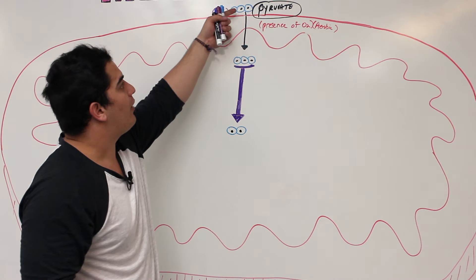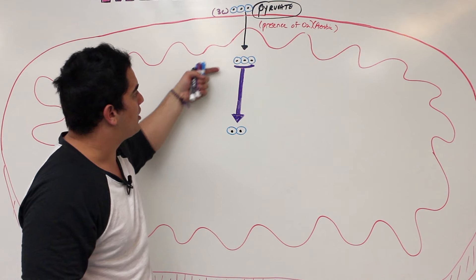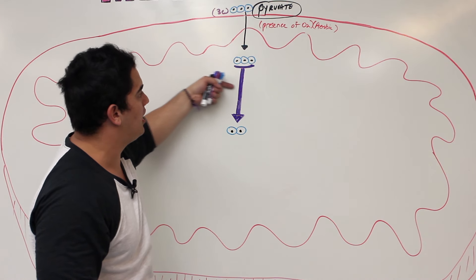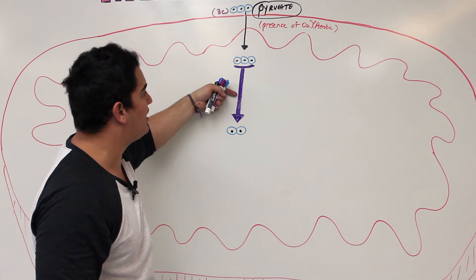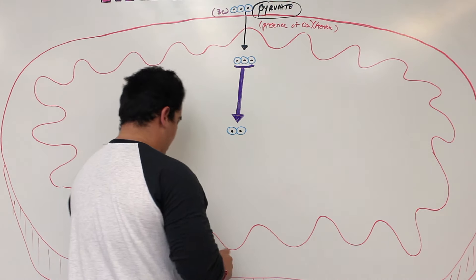So the only way the pyruvate can get taken into the mitochondria and start getting converted into this next molecule is if there is oxygen present. Now when pyruvate is transported from the cytosol into the mitochondria, there's a specific enzyme right here that's going to be controlling this. We're going to talk about this in more detail in the biochemistry video. But specifically, look what happens here.